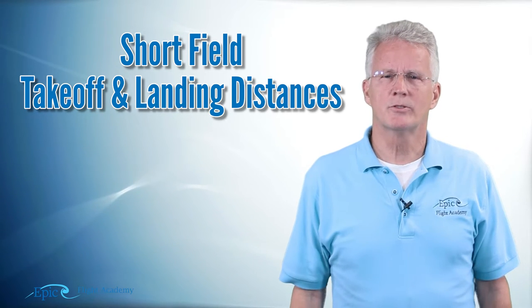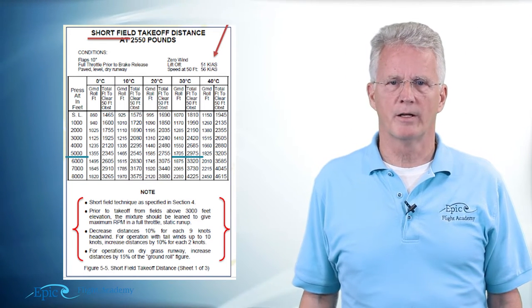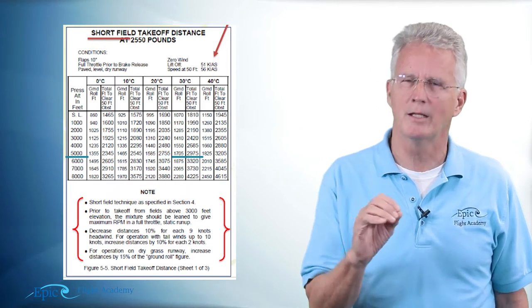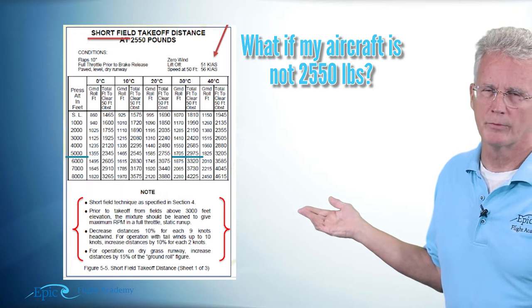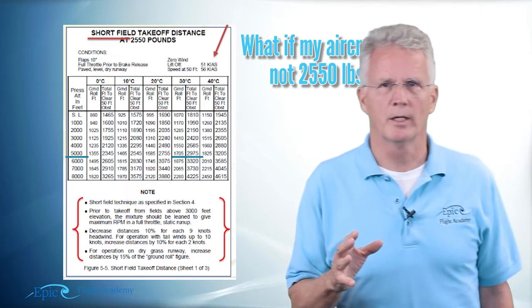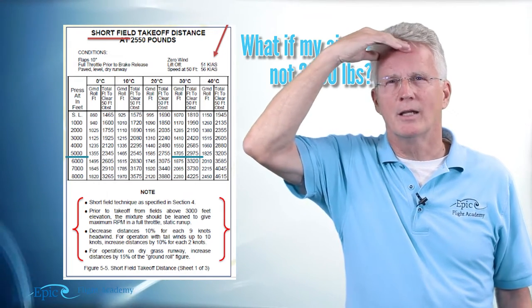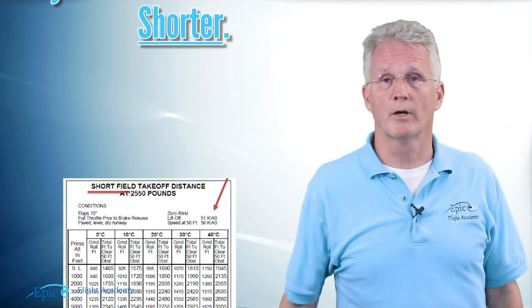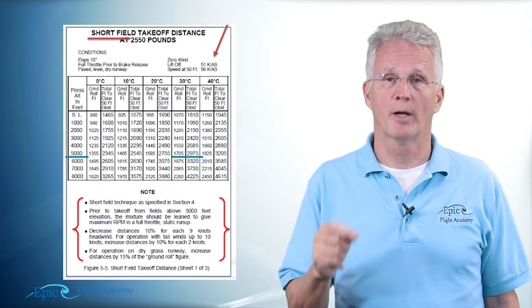Let's talk a little bit about this. You can see on the performance chart right here we're talking about short field takeoff distance at 2550 pounds. Now there's a couple of things we want to take into consideration. First of all, what if I'm not at 2550 pounds? What if I'm taking off and I weigh a little bit less, maybe 2400 pounds or 2200 pounds? What do you think would happen to the takeoff distance if I'm lighter? I'll take off in a shorter distance, exactly correct.